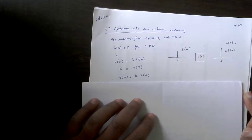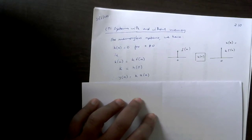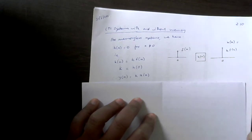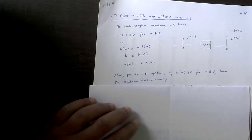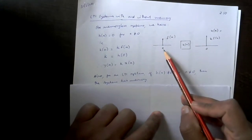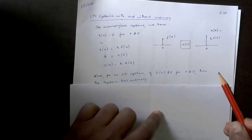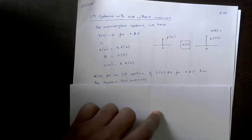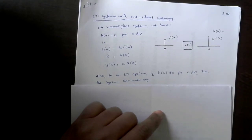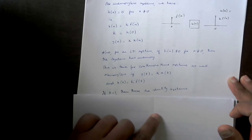If the system is memory-less, then y(n) = k·x(n), because if you give an x(n), your output will be some factor of the input. If h(n) is not equal to 0 for n not equal to 0, then that means the system has memory. So a necessary and sufficient condition for a system to be memory-less is that its impulse response will be a scaled impulse. This is the same for continuous-time systems as well.